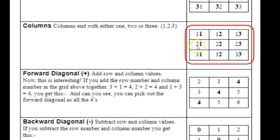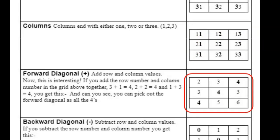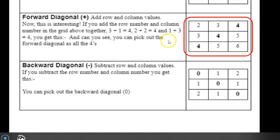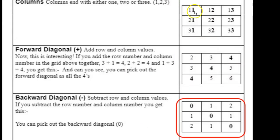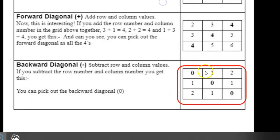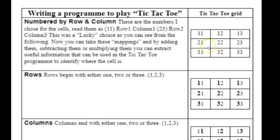For columns, you look at row 1 column 1, row 2 column 1, and so on. Now here's where it gets really interesting: you can identify the diagonals by adding the digits together. 1+3 gives you 4, 2+2 gives you 4, and 3+1 gives you 4 — that's one diagonal. For the other diagonal, you subtract: 1−1 is 0, 2−2 is 0, 3−3 is 0.